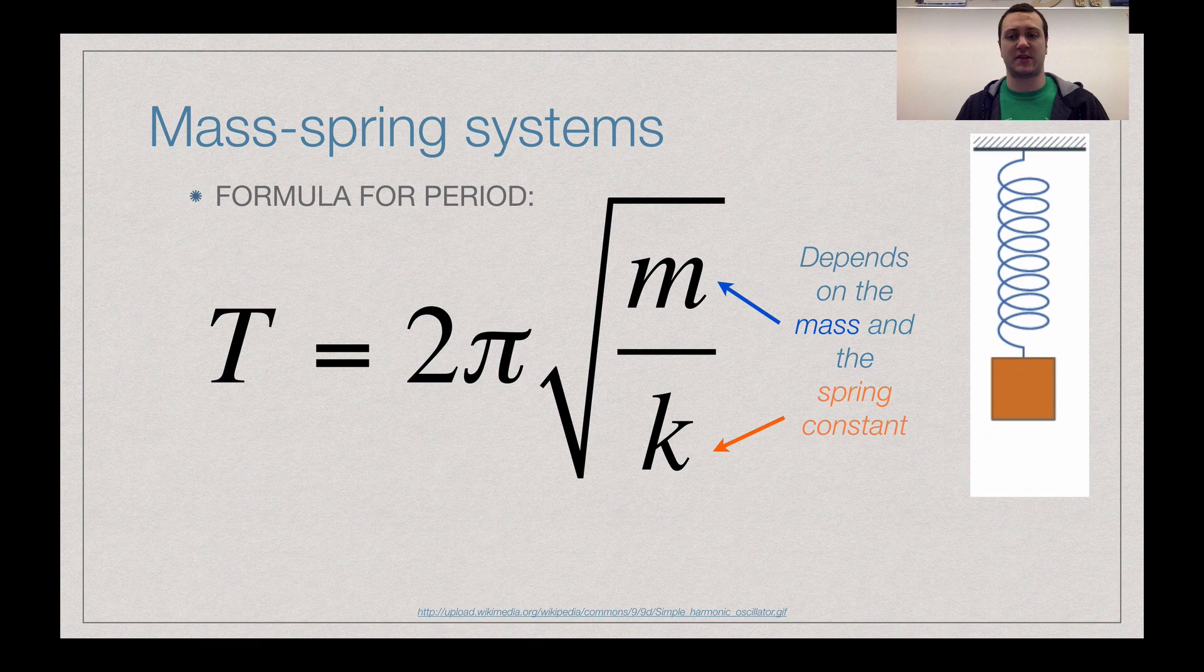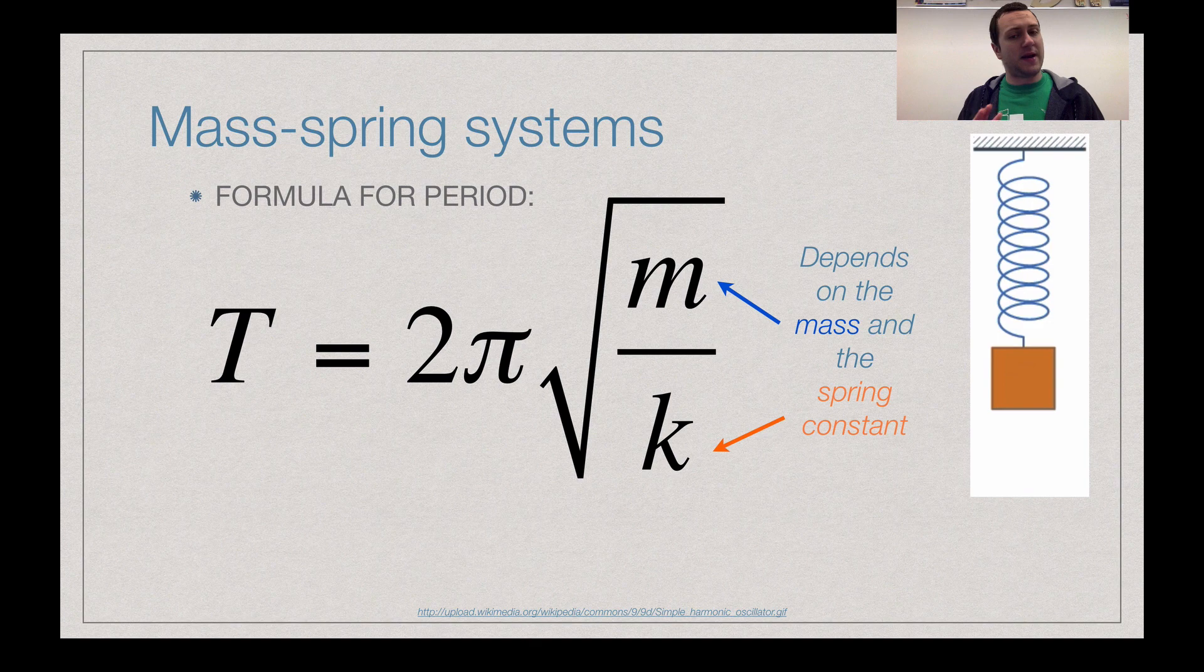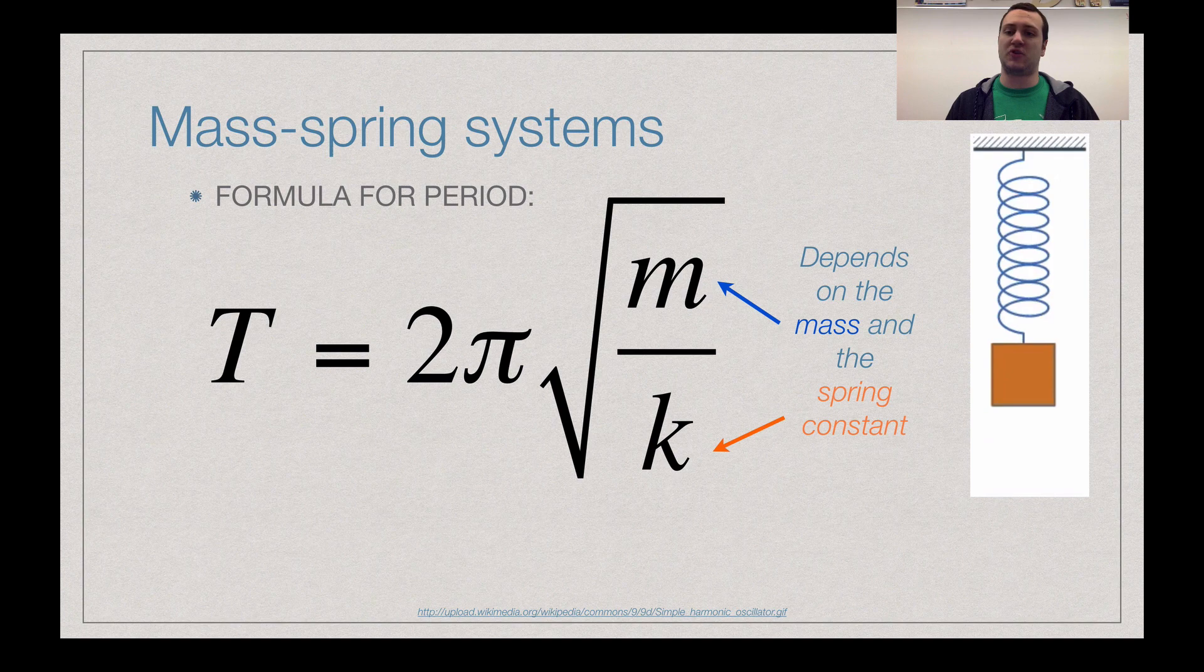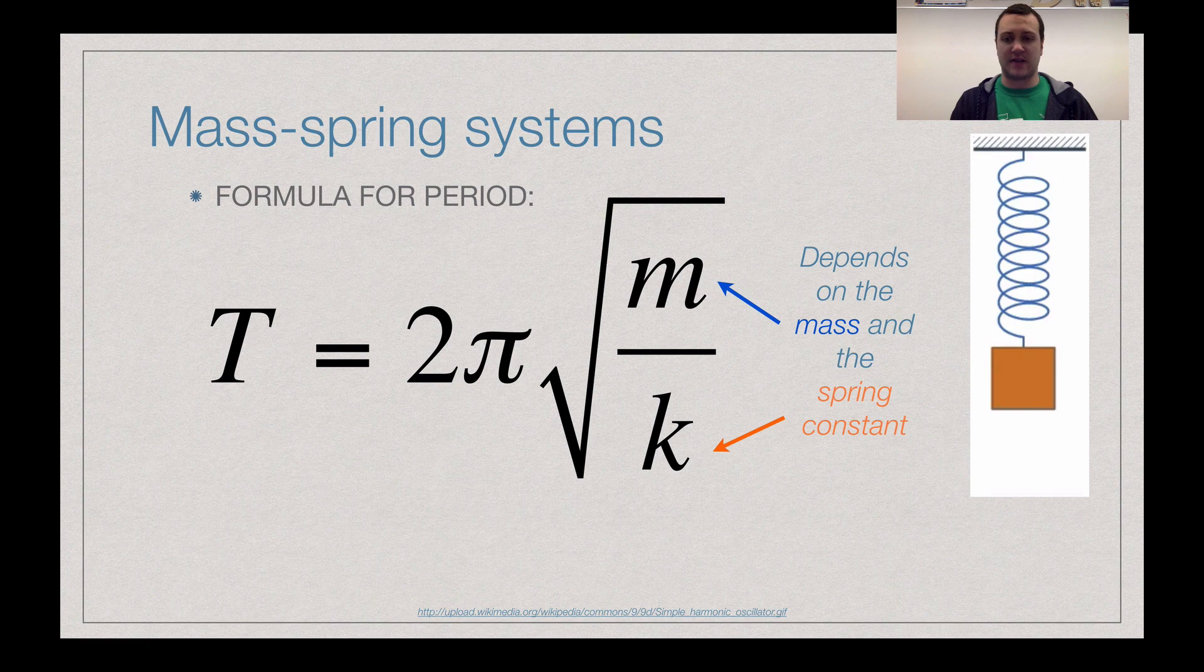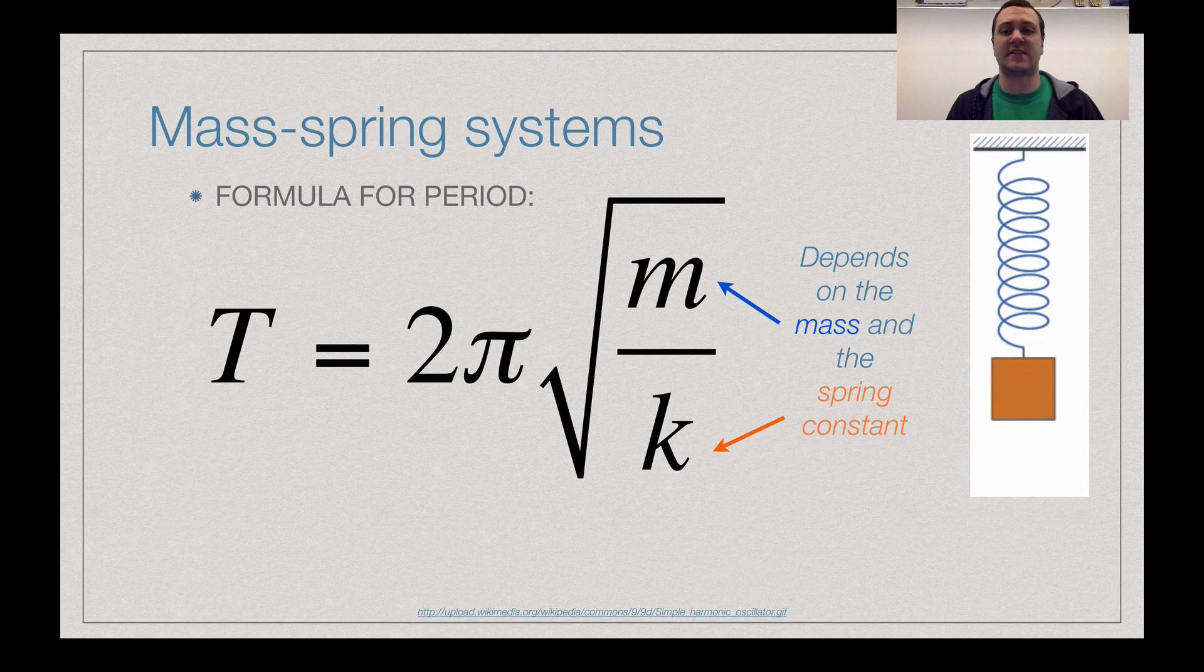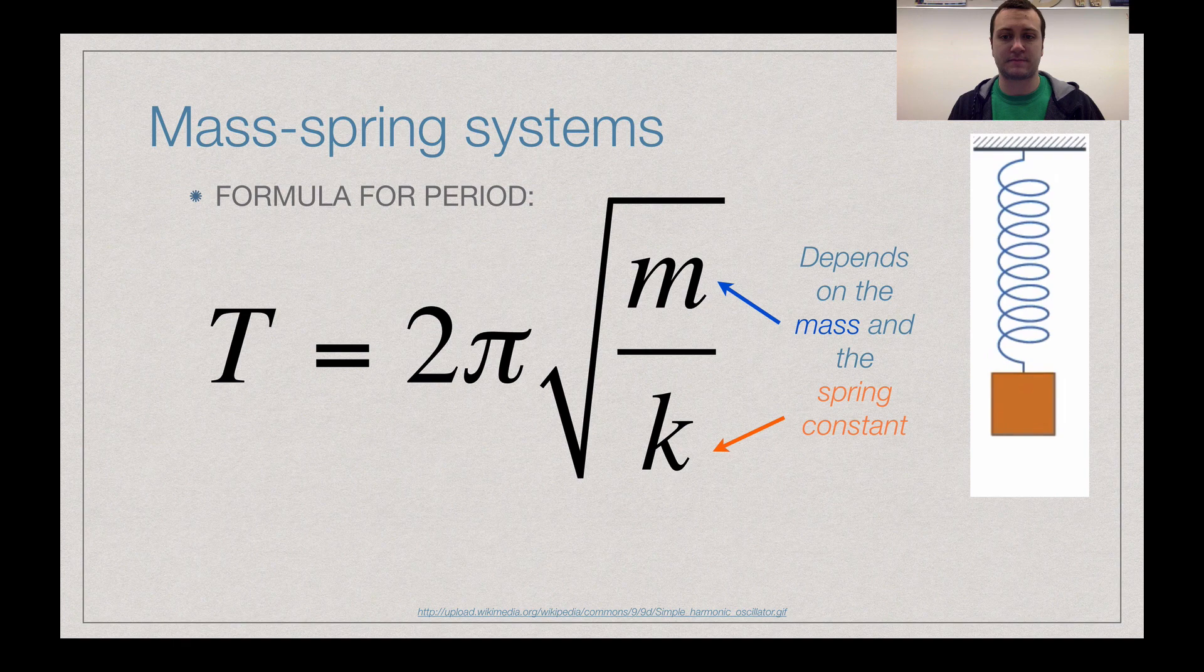So for a pendulum, the mass did not matter. For a mass spring system, the mass absolutely does. Because this is not, depending on orientation, a mass spring system does not have to be dependent on that gravitational pull, allowing this thing to move vertically. If we put it horizontally, set it on a table and stretch it horizontally across the table, then we have frictional forces that are at play, but the mass of that spring or the mass hanging from that spring will still be significant. So this is what we get.